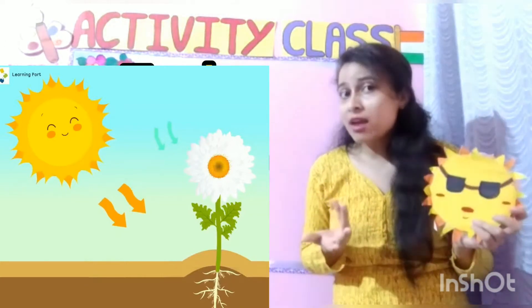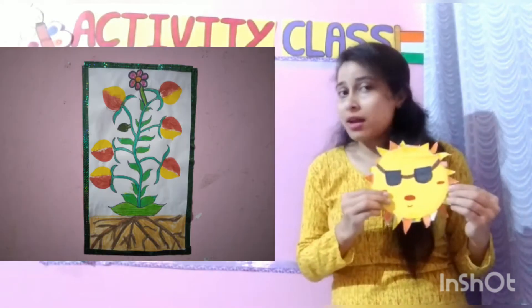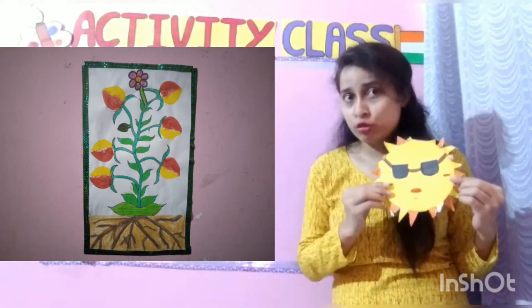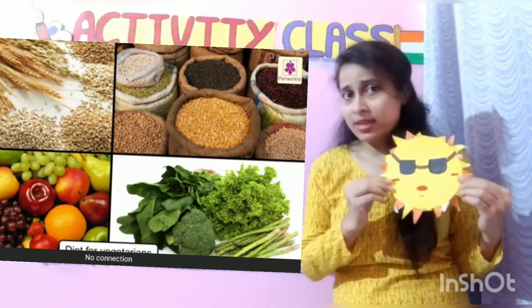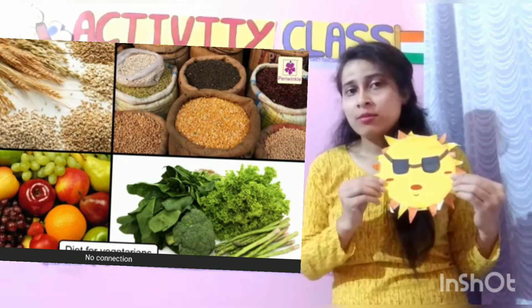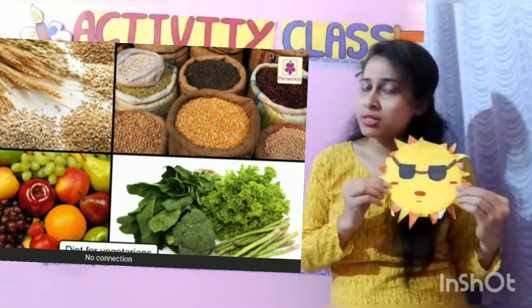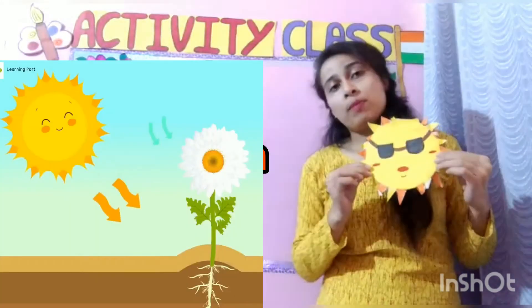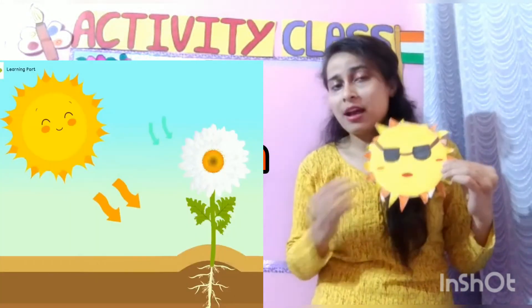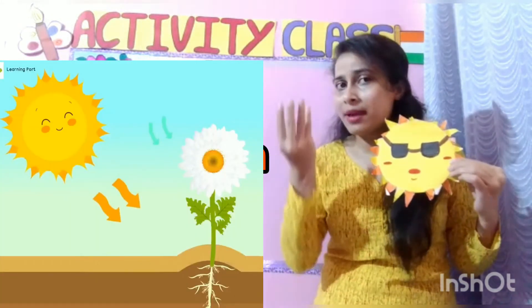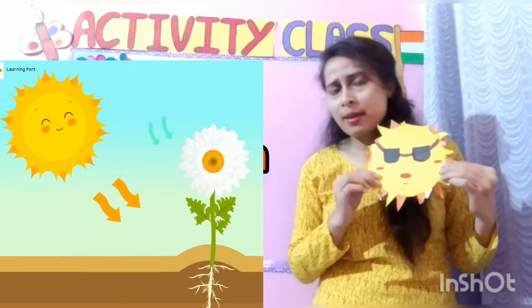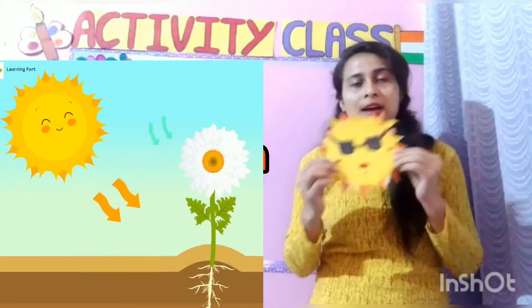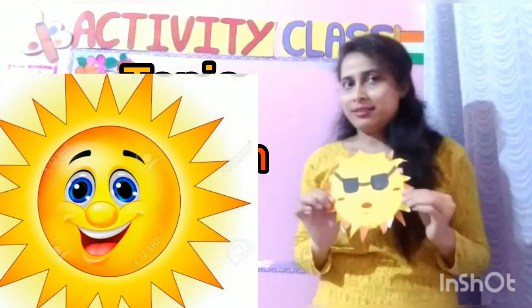तो हम खाएंगे क्या? हम बिना खाने के तो नहीं रह सकते हैं — हमें fruit, vegetables तो चाहिए. डेली हम fruits और vegetables खाते हैं, तो अगर sunlight नहीं होगी, तो plants अपने लिए food नहीं बना पाएंगे, ना ही वो grow कर पाएंगे, तो फिर हम भी नहीं रह पाएंगे. इसलिए, so children, we need the sun.